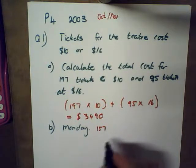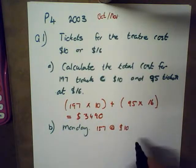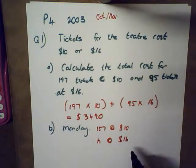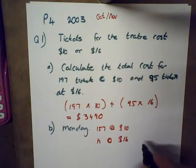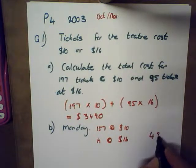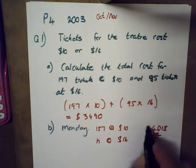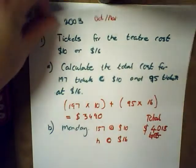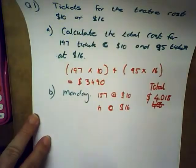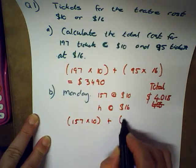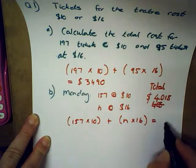Question B: on Monday 157 tickets were sold at $10 and n tickets were sold at $16. The total cost was $4018. To solve this it's pretty much the same as the previous problem. We write: 157 times 10 plus n times 16 equals 4018.